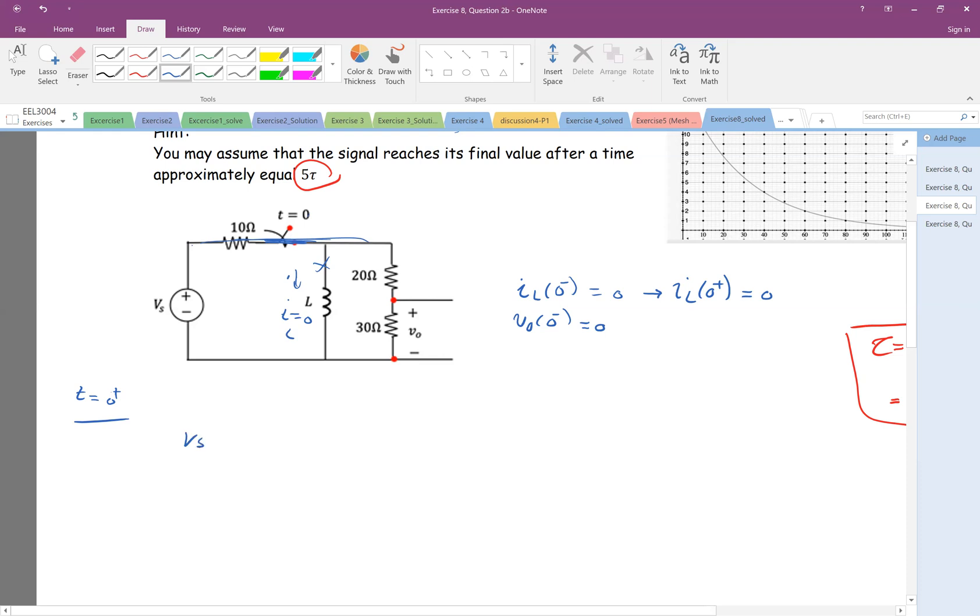Basically, we have Vs, and then we have this 10 ohm. There's no current here. And then we have 20 ohm, and then we have 30 ohm. And this is V0.